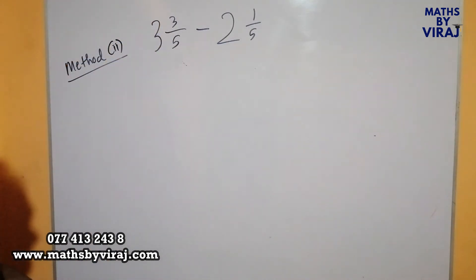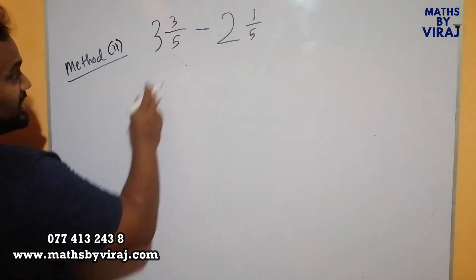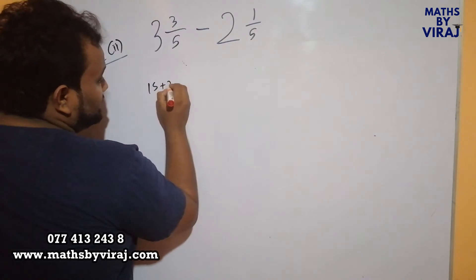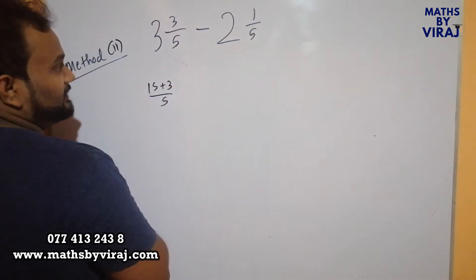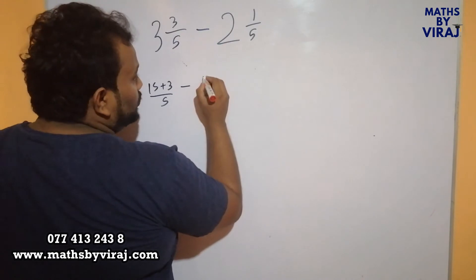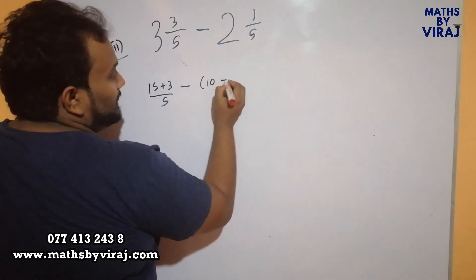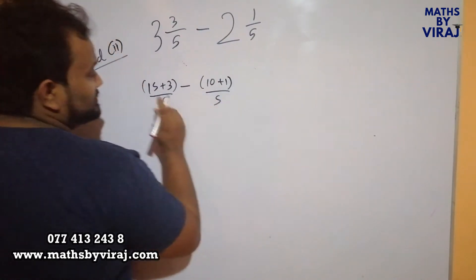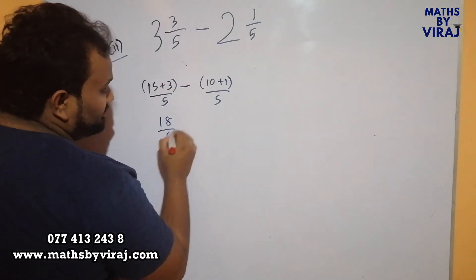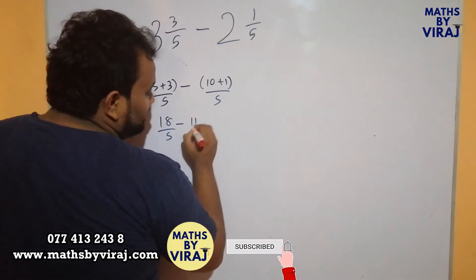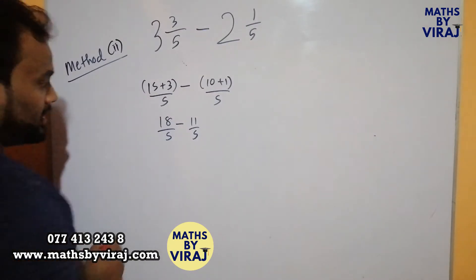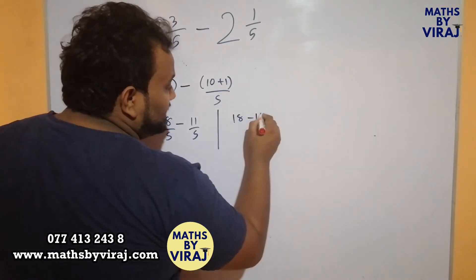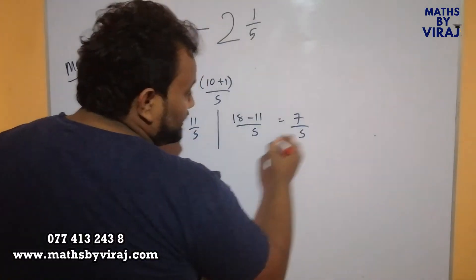We convert all mixed fractions into improper fractions. That is 5 multiplied by 3, which is 15, and then you add 3 over 5, minus — 5 is multiplied by 2, which is 10, plus 1 over 5. So what we have here is 18 over 5 minus 11 over 5. Now you see that the denominators are the same, so basically what you do is subtract the numerators, which gives us 7 over 5.